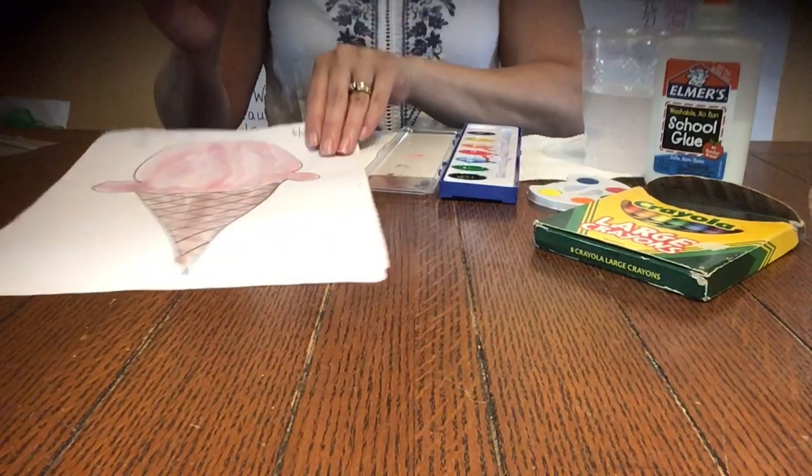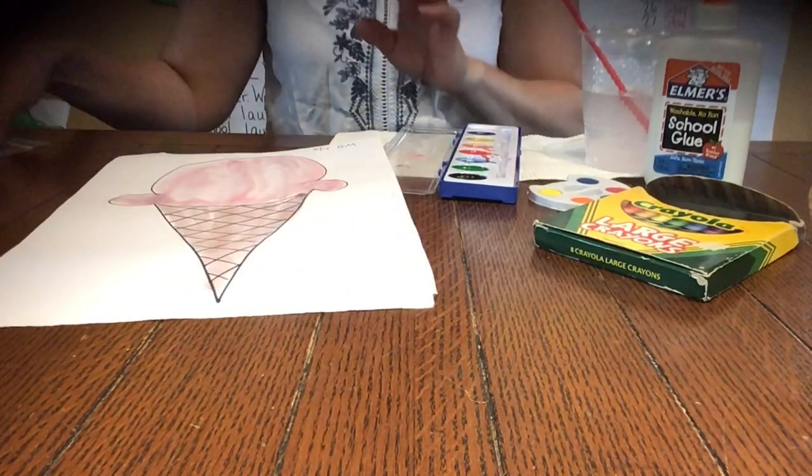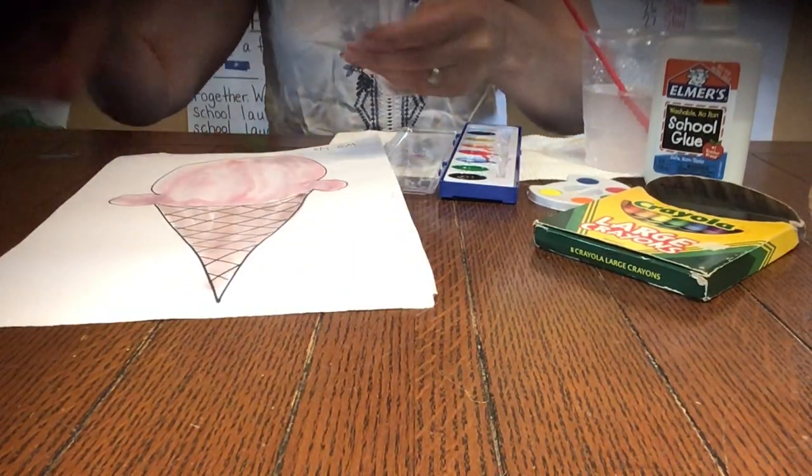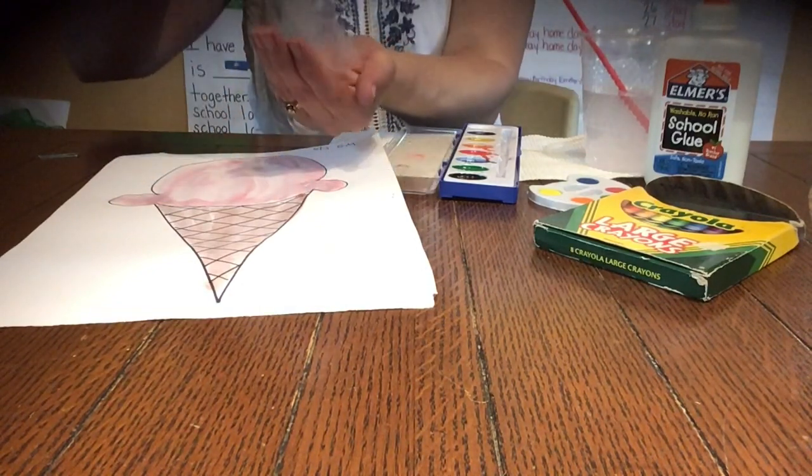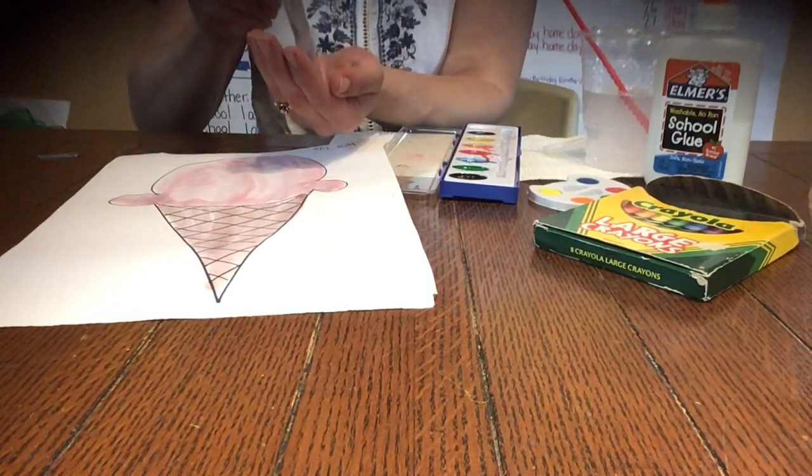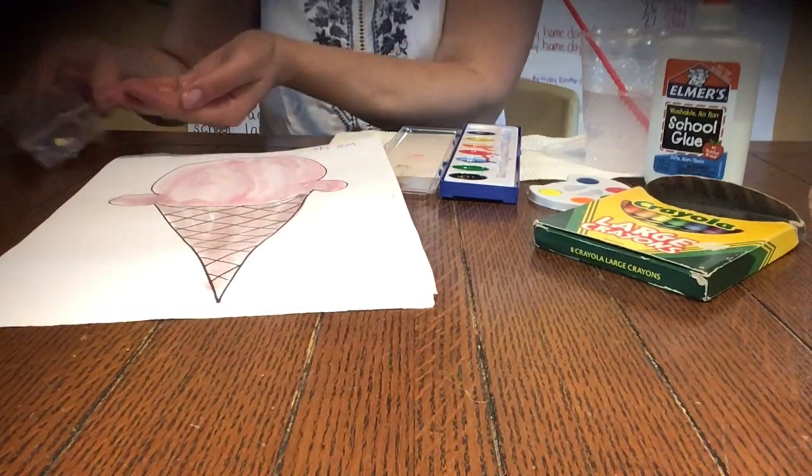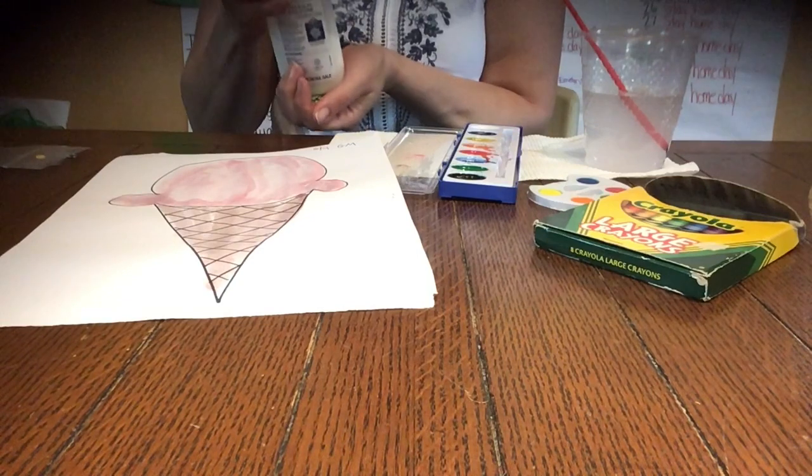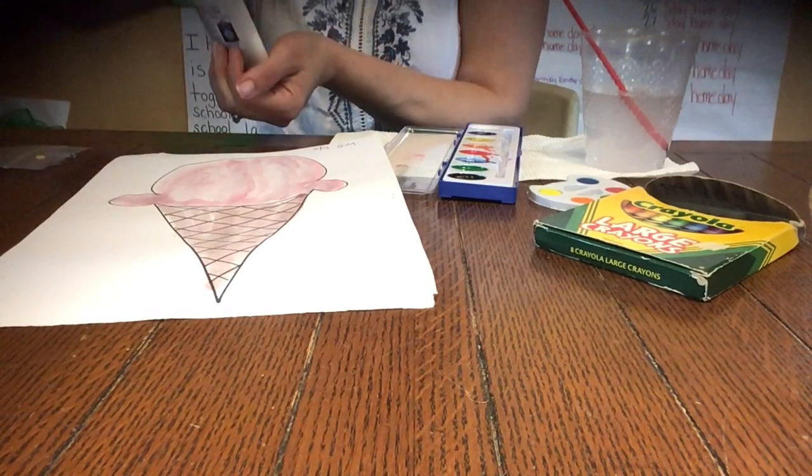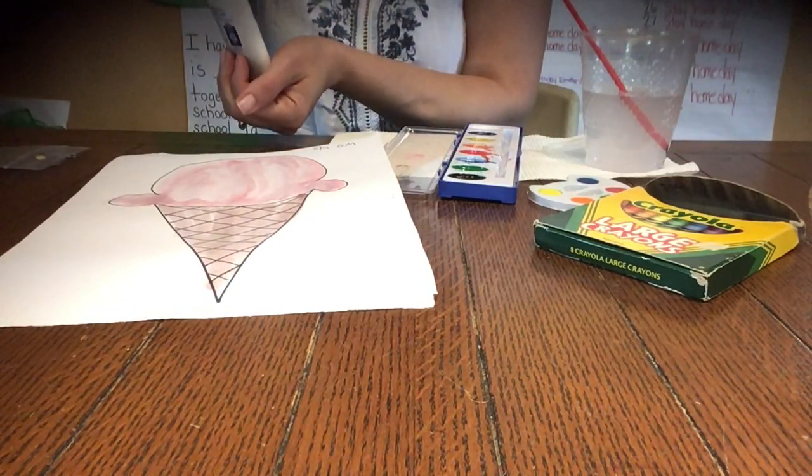Then I'm going to get my confetti. The confetti is going to be like sprinkles on top. Do you like sprinkles on top of your ice cream? I'm going to pour them out. Get your glue. And to make these little circles, I'm going to make polka dots with my glue.